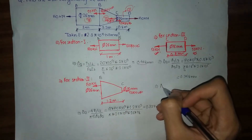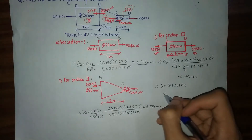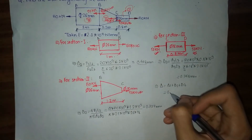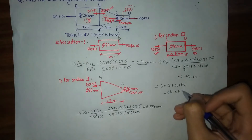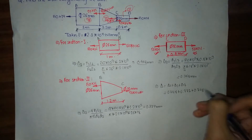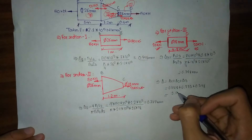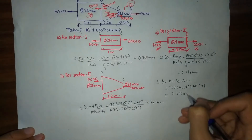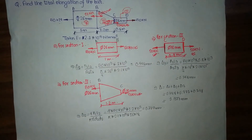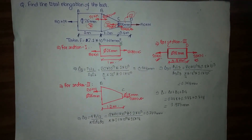To find the total elongation of the bar: δ_total = δ₁ + δ₂ + δ₃ = 0.448 + 0.777 + 0.748 = 1.973 mm. Hope you have understood how the elongation of the bar is calculated. If you have any queries, comment below, and if you like our content please subscribe — it motivates me to upload more similar videos. Thank you.